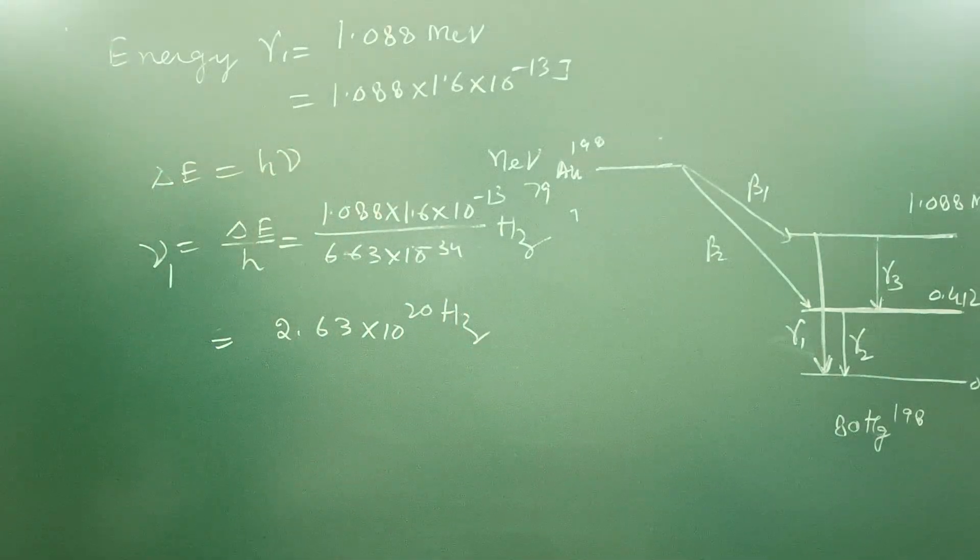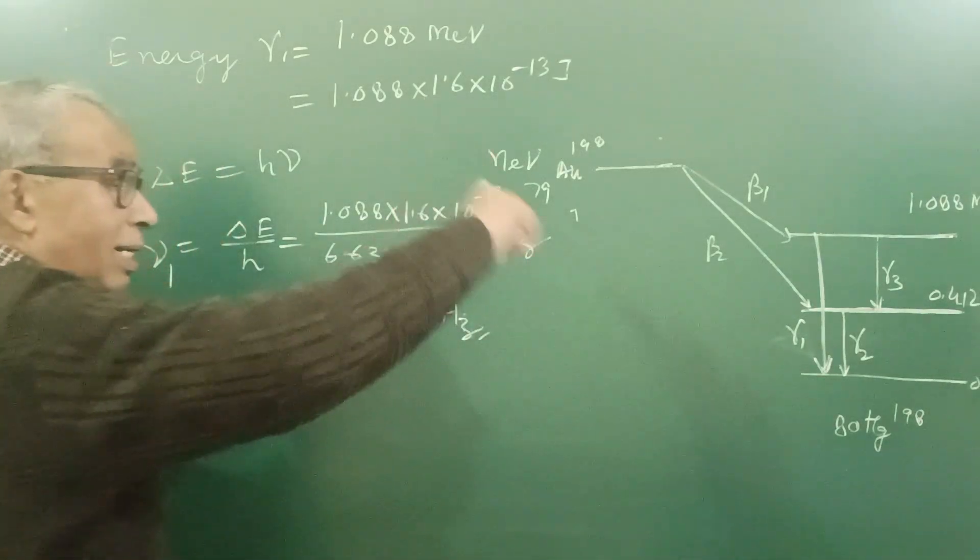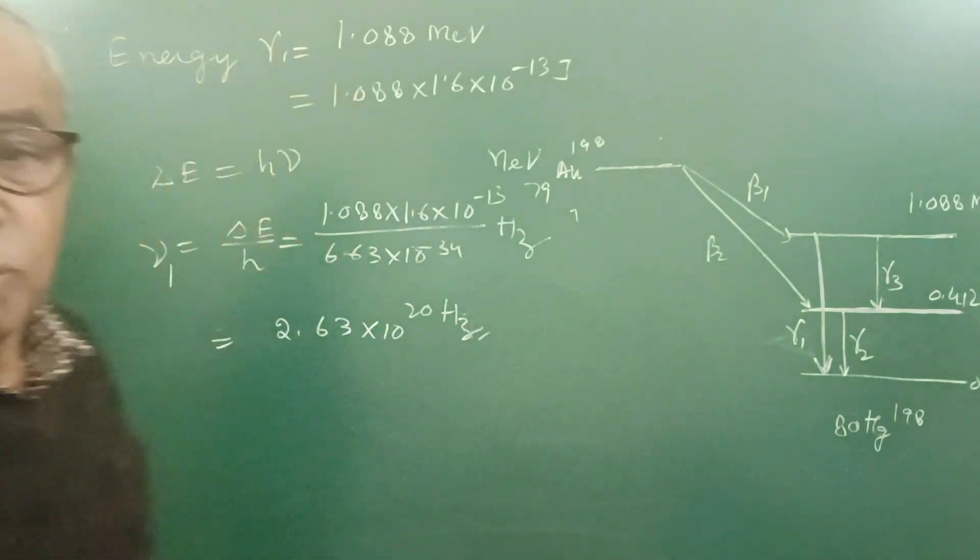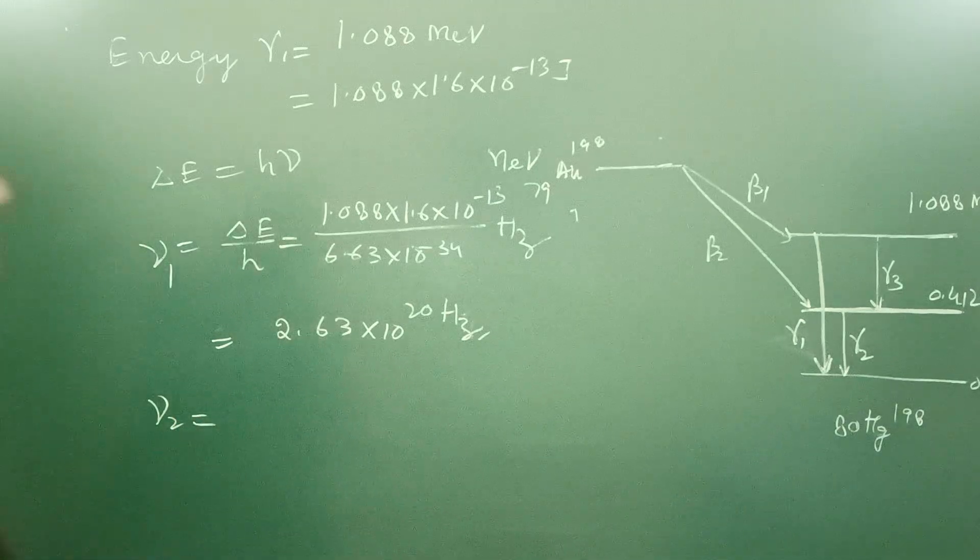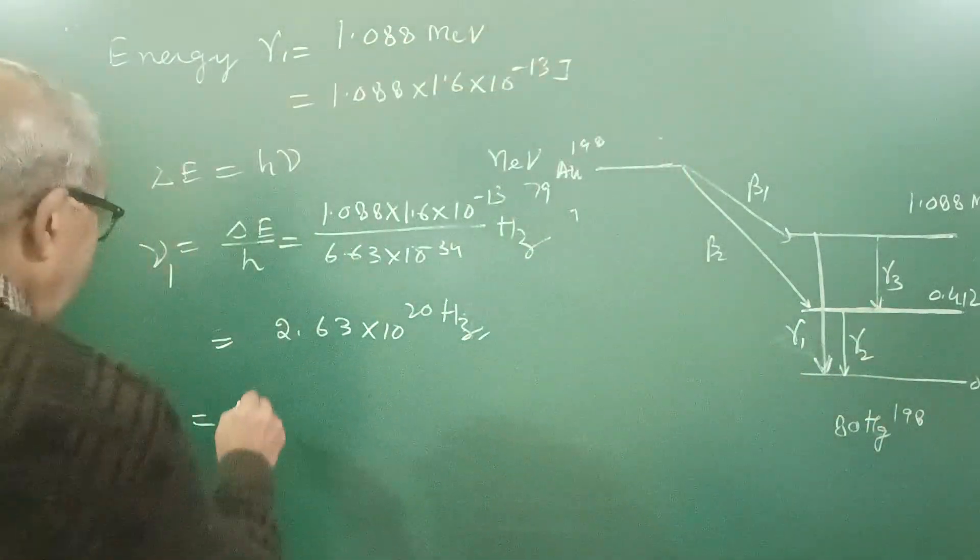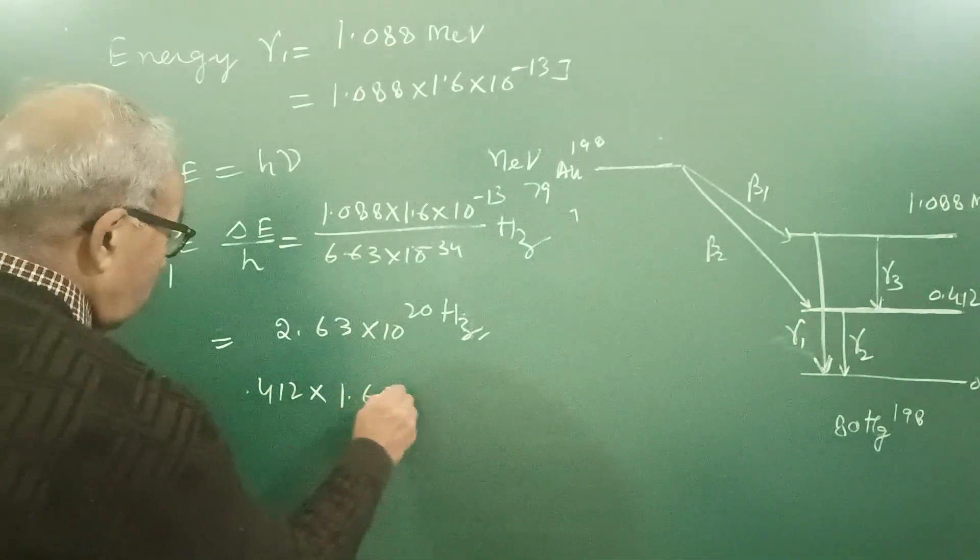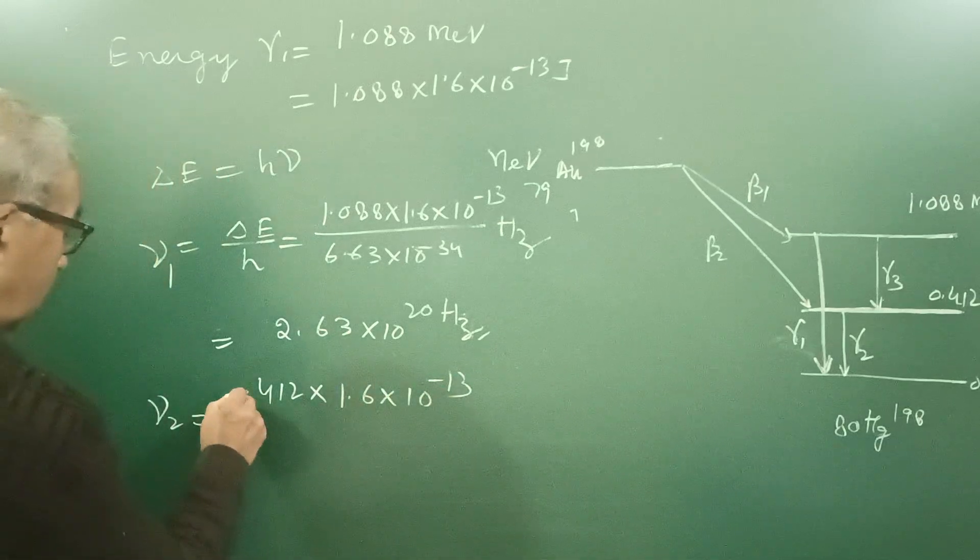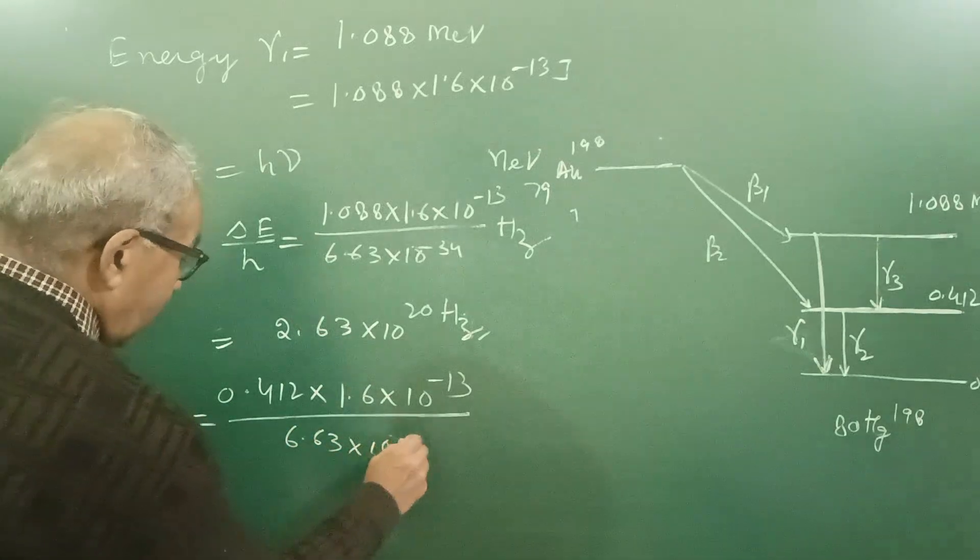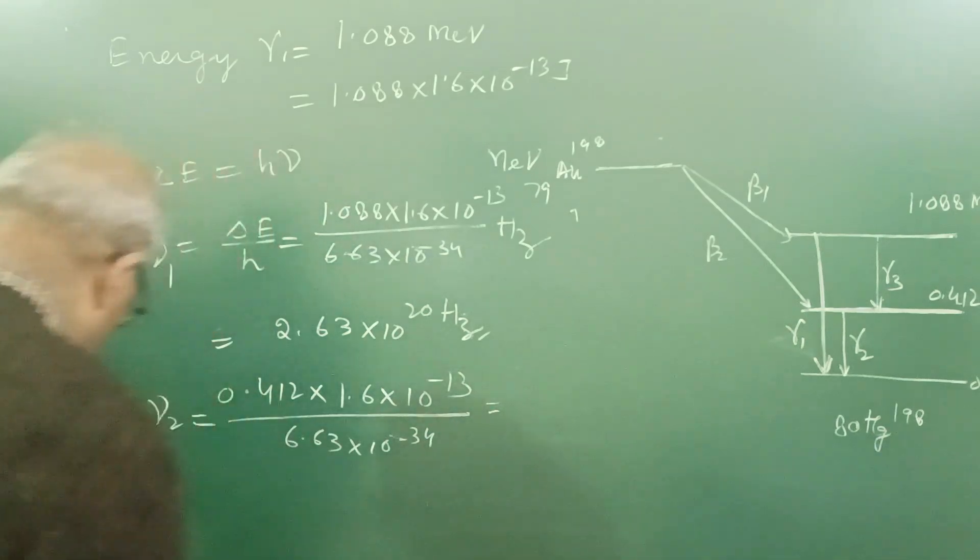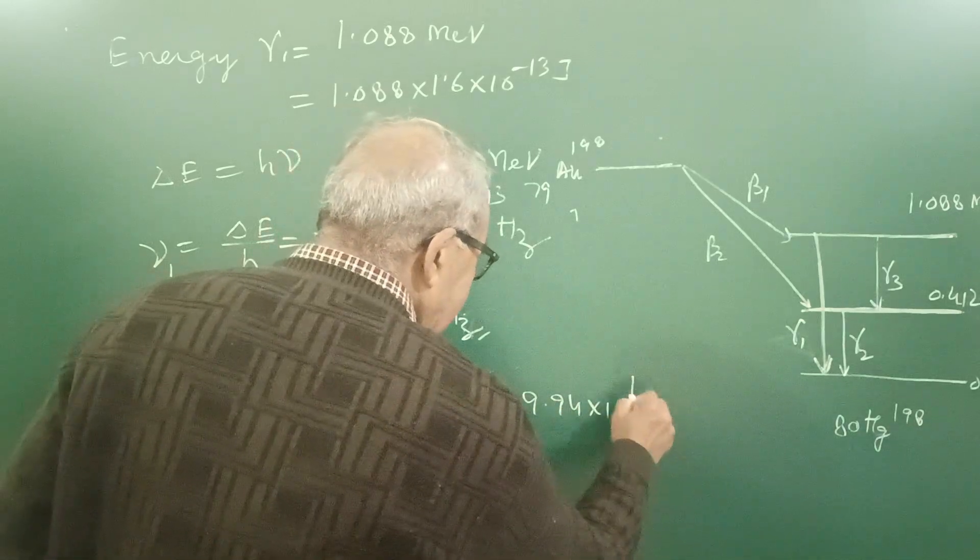Dividing this, you can divide yourself. Please don't use calculator, divide yourself. I am telling you the path which should be followed by you to solve. Then nu 2, similarly, is 0.412 times 1.6 times 10 to the power minus 13 Joules upon 6.63 times 10 to the power minus 34, and it comes out to be 9.94 times 10 to the power 19 hertz.